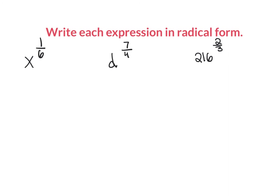Here are three examples where we have rational exponents and we're going to change them into radical form. The first one is x to the power of 1/6. We have 1 in the numerator, the denominator is my root, so this is just the sixth root of x.